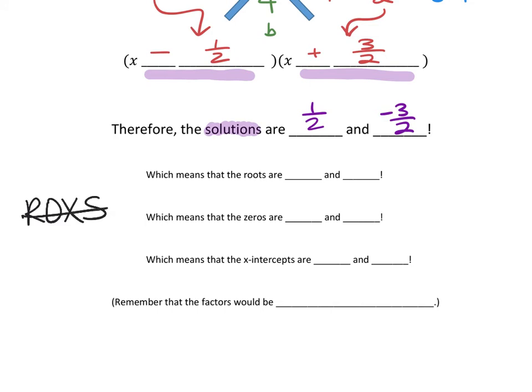Which means the roots are 1 half and negative 3 halves. And the zeros are 1 half and negative 3 halves. And if we graphed this, the x-intercepts would be 1 half and negative 3 halves.